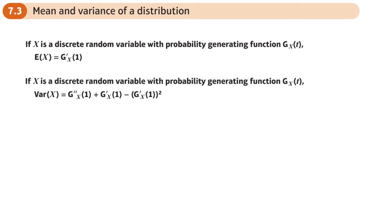This is the third section of the probability generating functions chapter, and this is finding the mean and variance of a distribution using the PGF, the probability generating function. This is where the probability generating function really comes into its own and we can find the mean E of x and we can find the variance Var x very easily.